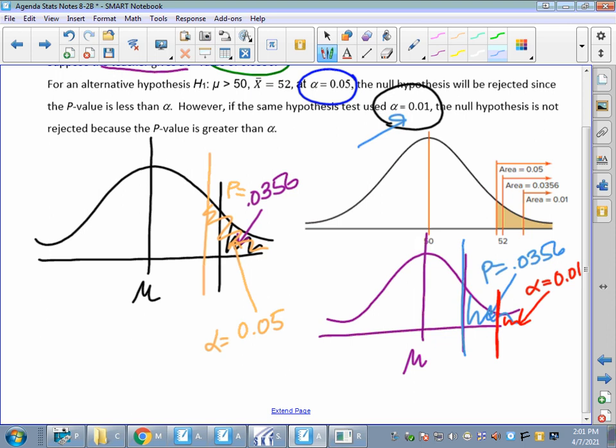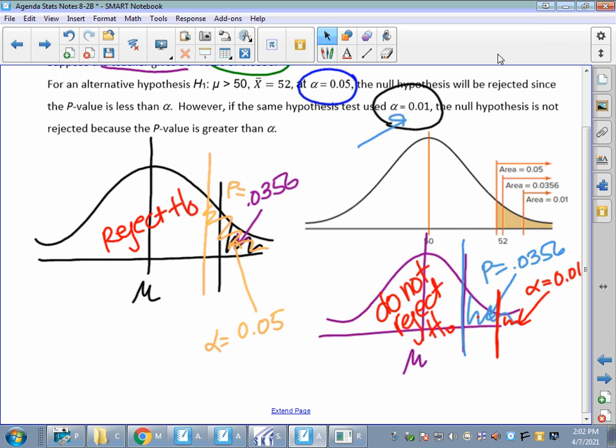A smaller area means that some of my p-value is in the non-rejection region. So this one would be reject H sub O. This one would be do not reject H sub O because some of my p is sticking out. It's a larger area. So it's using the same thing and thinking of that dividing line, but we're not looking at the actual critical value, which means that we've got to figure our p-value. So that's what we're going to need to calculate.